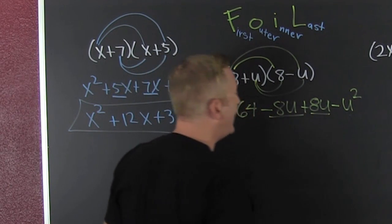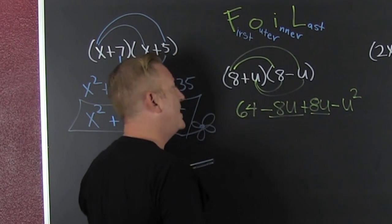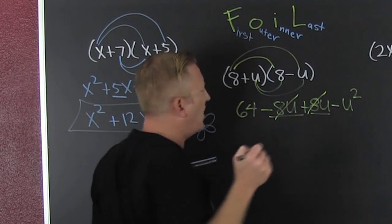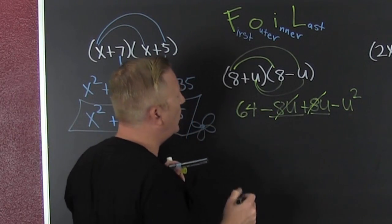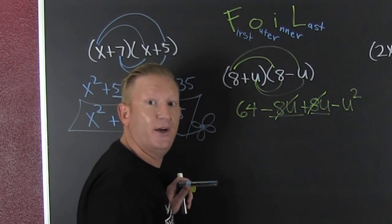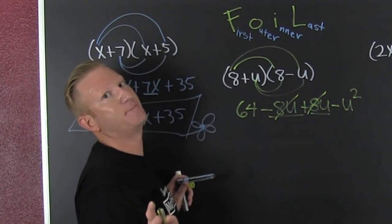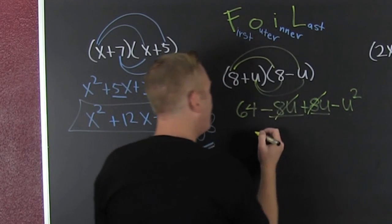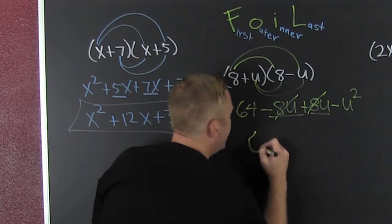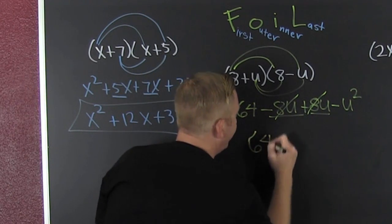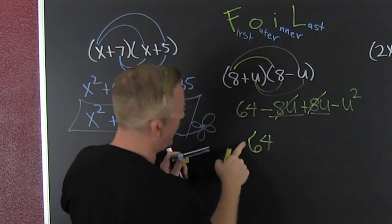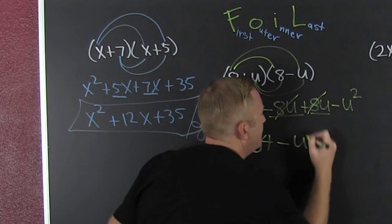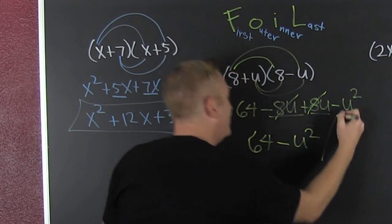We see we have additive inverses. They fight! They go away. It's special — you're going to find out that it's special. And then that's 64 minus u squared.